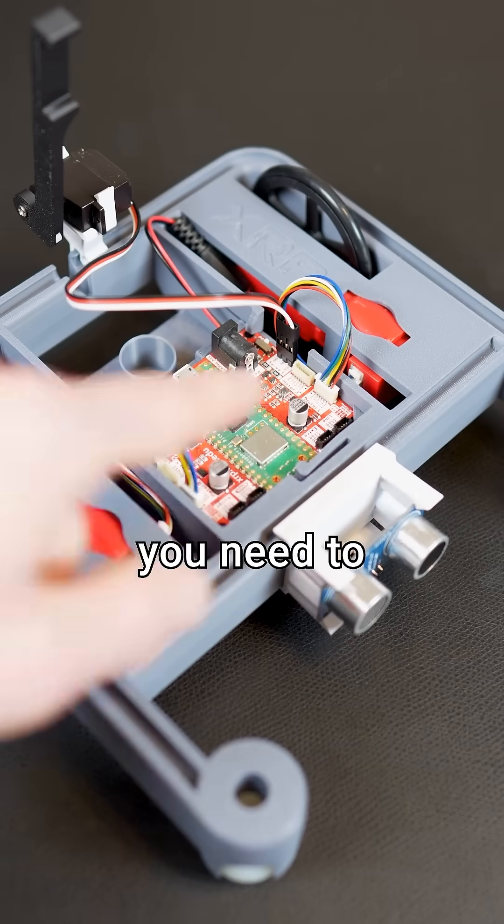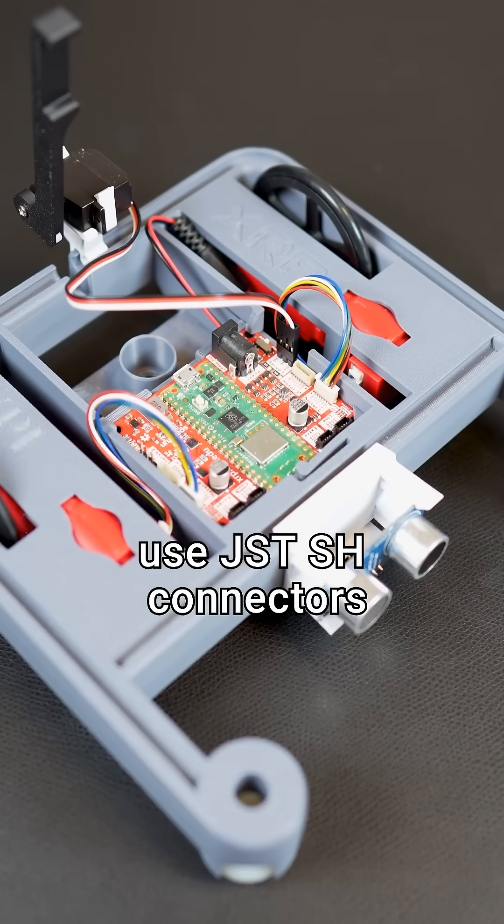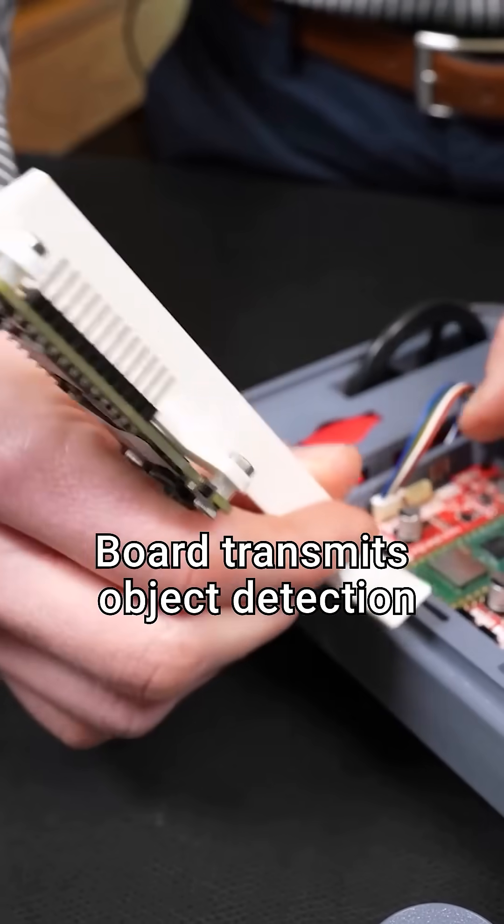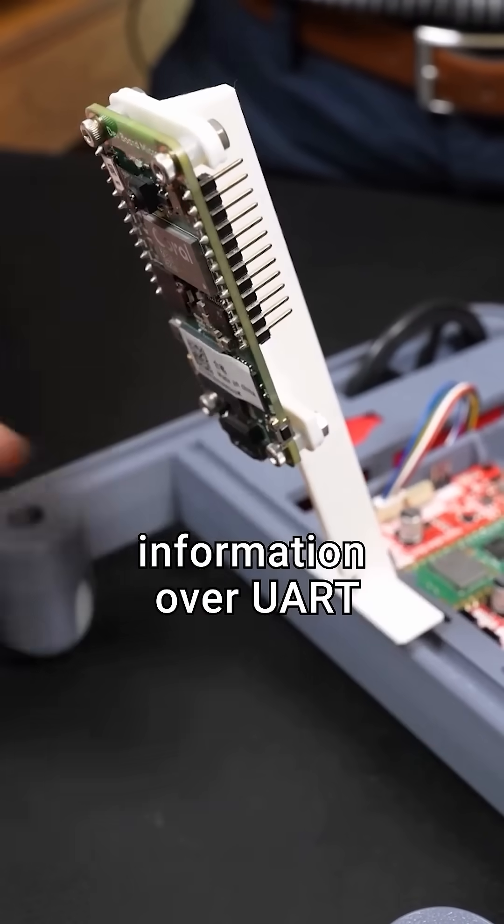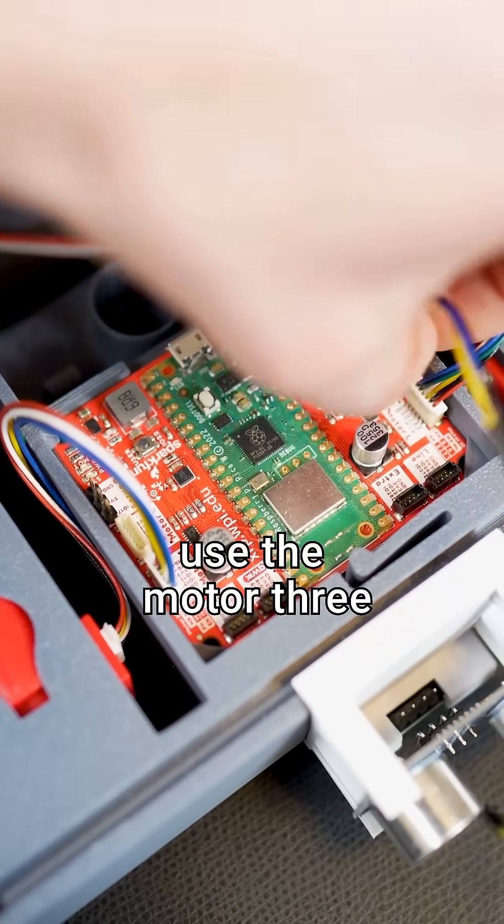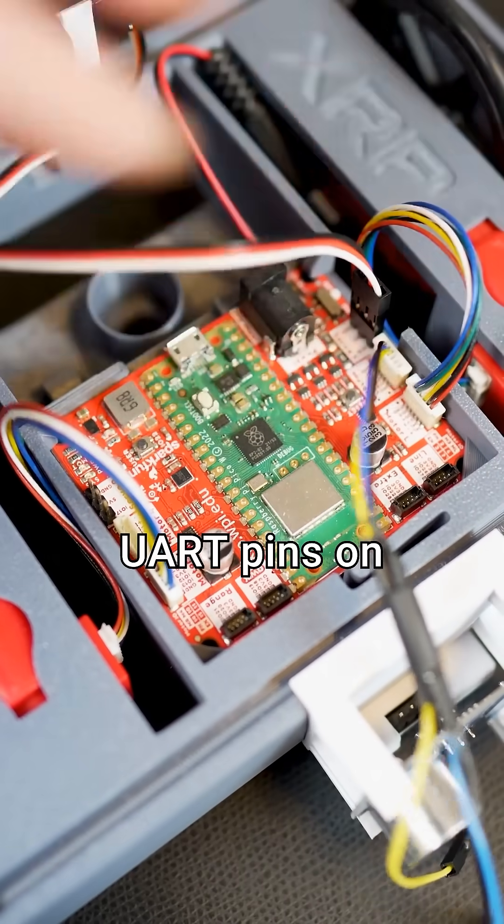To access other pins, you need to use JSTSH connectors. For example, this Google Coral Micro board transmits object detection information over UART. I had to use the Motor 3 port as it shares UART pins on the Pi Pico.